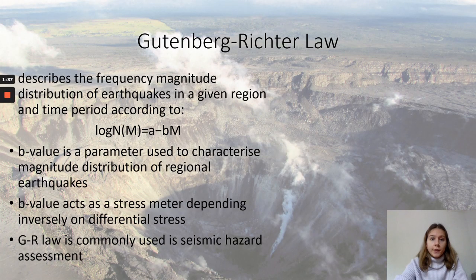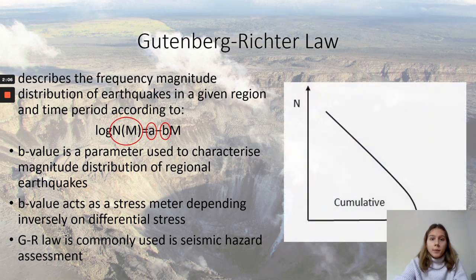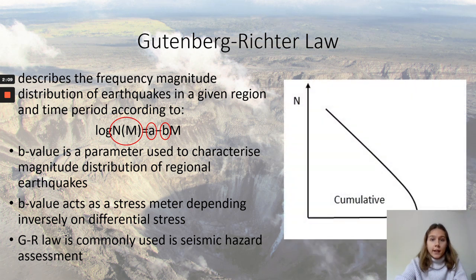The Gutenberg-Richter Law is commonly used as a forecasting tool for earthquake statistics. It describes the frequency-magnitude distribution of earthquakes in a given region and time period according to the formula shown here. N(m) is the total number of earthquakes of magnitude m or above. 'a' is a constant and 'b', or b-value, is a parameter used to characterize the magnitude distribution of regional earthquakes. When the log of the number of earthquakes of magnitude m or above is plotted against the magnitude, it normally produces a straight line graph where the gradient is the b-value.